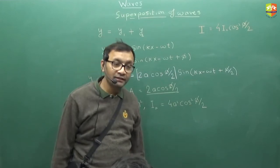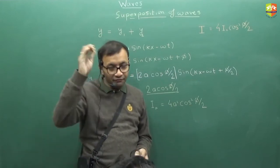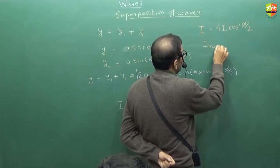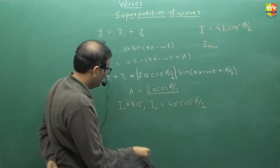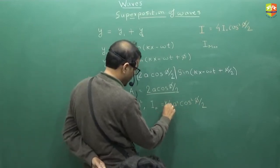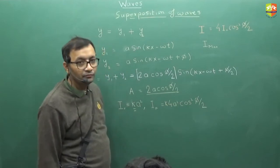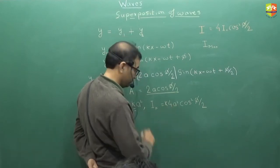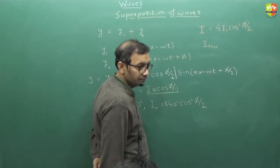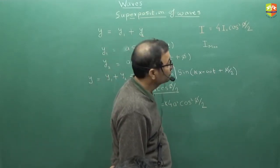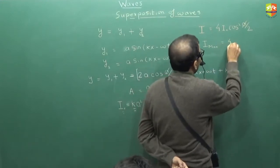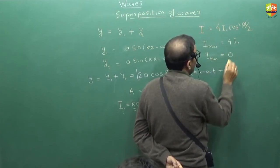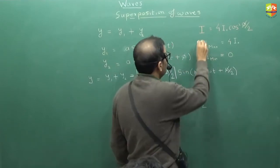Now what is the maximum possible intensity? If I can change the phase difference, what is the maximum possible intensity? 4i₀. The k into a square is i₀. Both the k's should be same because frequency, wavelength, everything else is same. So i_max is 4i₀. What is the minimum value of intensity? Minimum is 0.